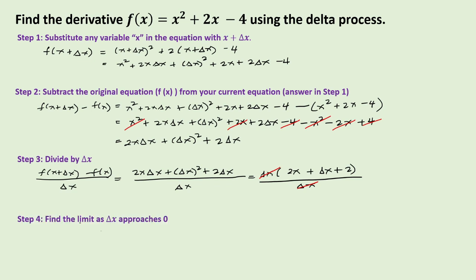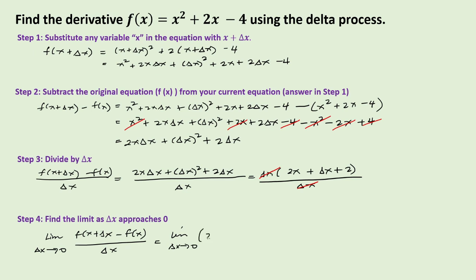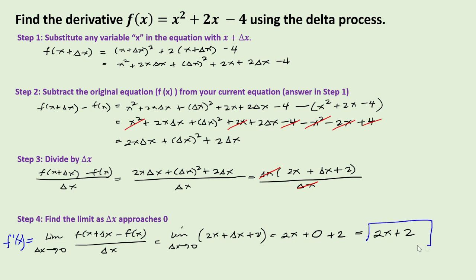For step four, we find the limit as delta x approaches zero. So we have the limit of 2x plus delta x plus 2 as delta x approaches zero. Substituting zero for delta x gives 2x plus 0 plus 2. Therefore, f prime of x, the derivative of x squared plus 2x minus 4, is 2x plus 2.